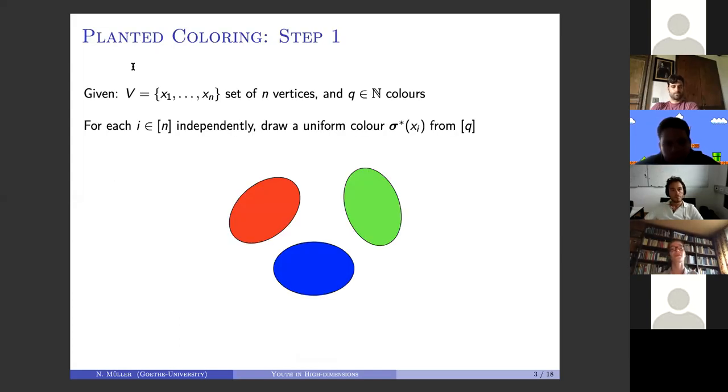Planted coloring is generated in two steps. In the first step, you have a vertex set of n vertices and q colors. For each vertex independently, you draw a uniform color from the set of all possible colors. In this example, we have three colors, and the partition could roughly look like this.